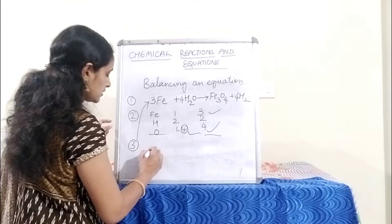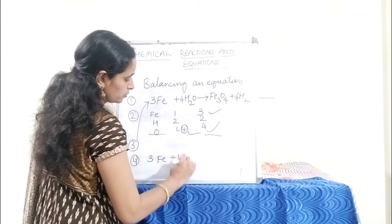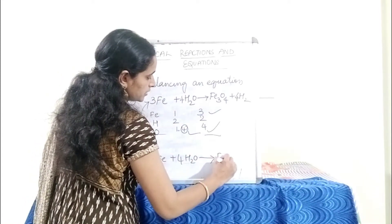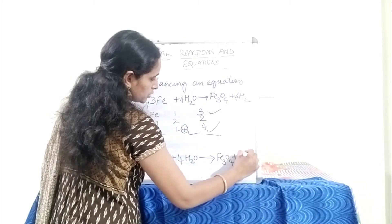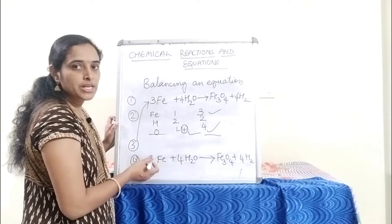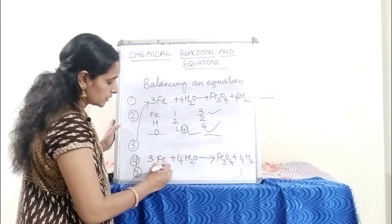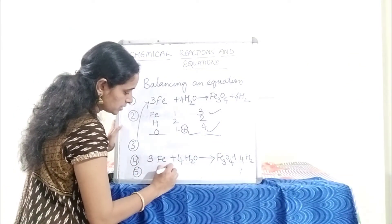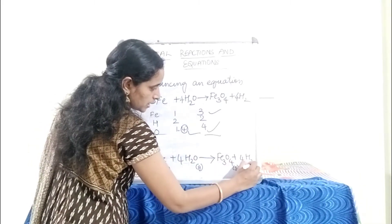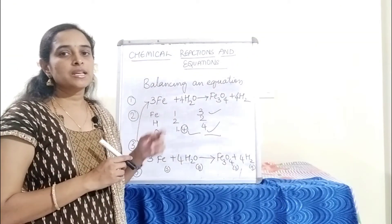The final balanced reaction is: 3Fe + 4H2O → Fe3O4 + 4H2. The next step is to write the physical states: Fe is solid (s), H2O is gaseous (g), Fe3O4 is solid (s), and H2 is gaseous (g). These are all the steps we need to follow to balance an equation.